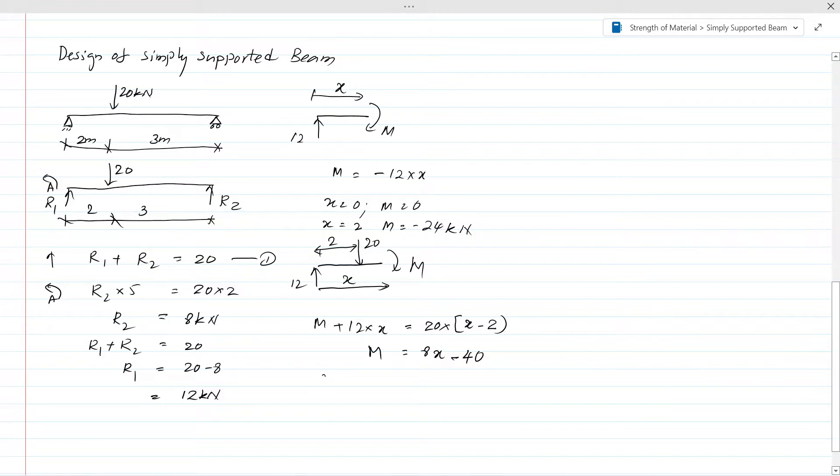At the point load where x equals 2 meters, M equals 2 times 8 minus 40, which equals 24kN-m. At x equals 5 meters at the support, M equals 0.